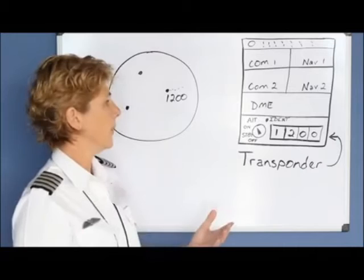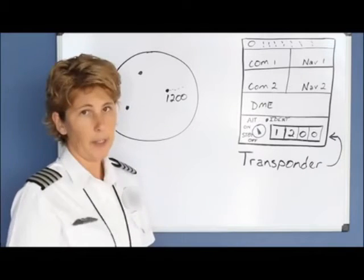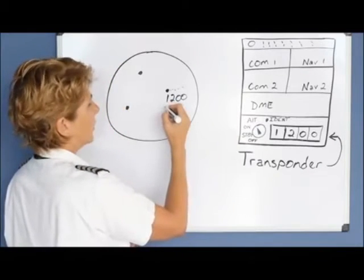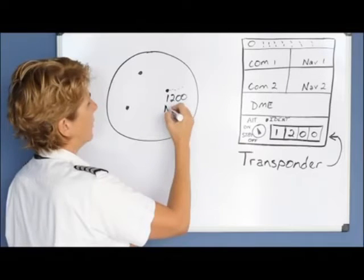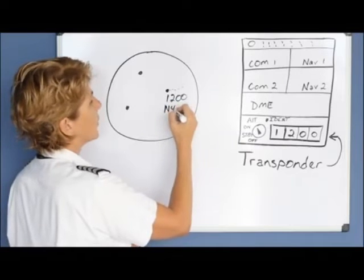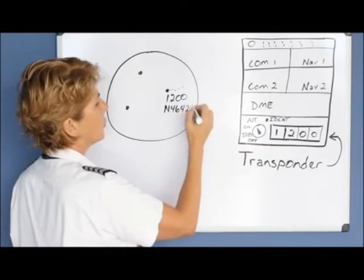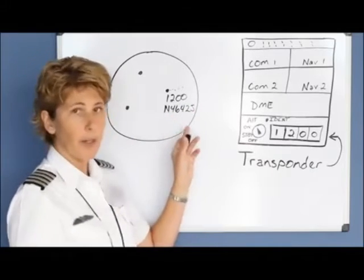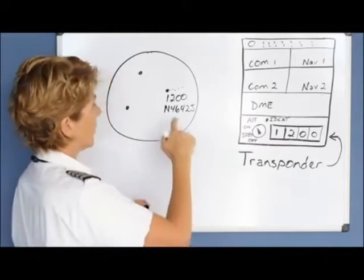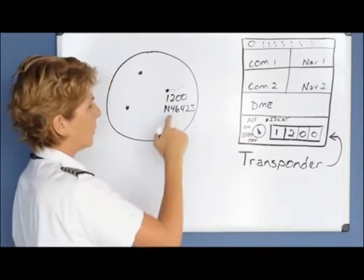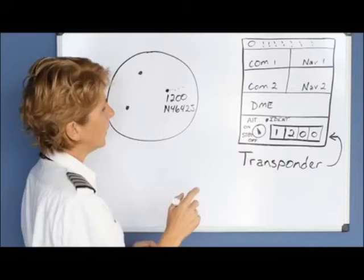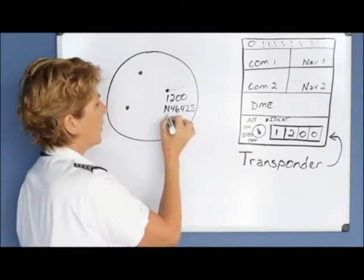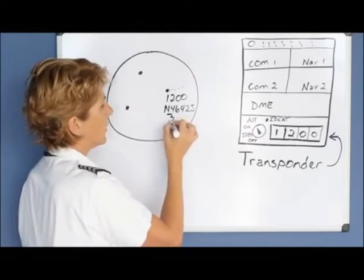Once you talk to them and give them your tail number — for example, let's say you called Greer Approach and told them November 4-6-4-2-Juliet — they will put that code in and can associate that dot with your tail number. Also, if you have it on the altitude selection, they can also see how high you are.